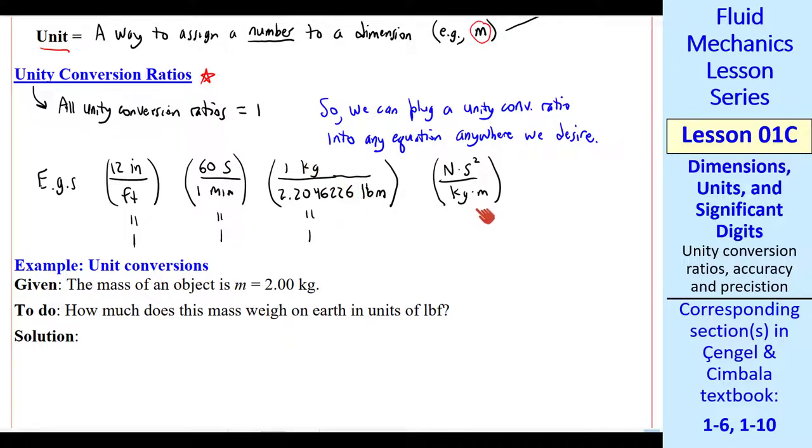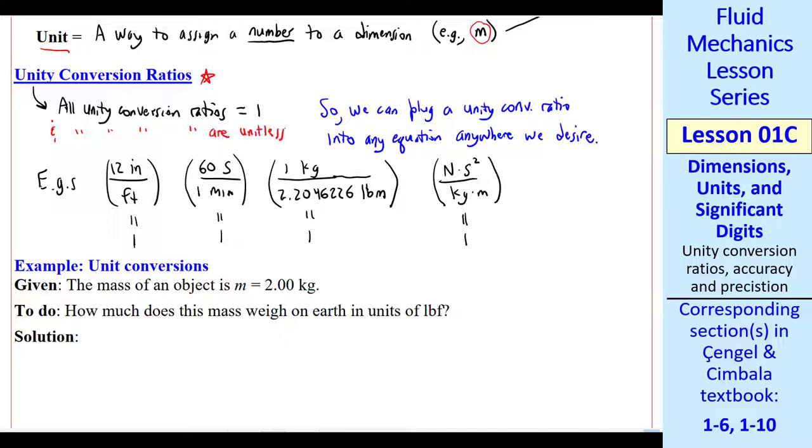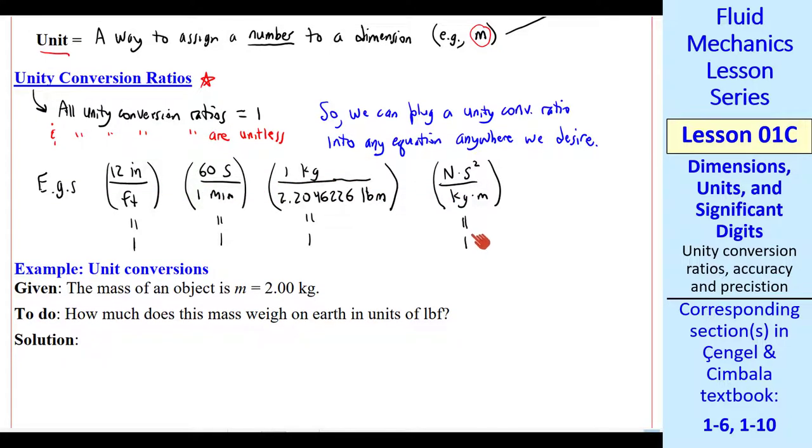These are dimensions of mass, and these are the units for this unity conversion factor. This is just a conversion factor from Newton's second law. Force is mass times acceleration. This is also equal to 1. All unity conversion ratios are unitless or dimensionless. All four of these examples have the value 1, and they have no unit.